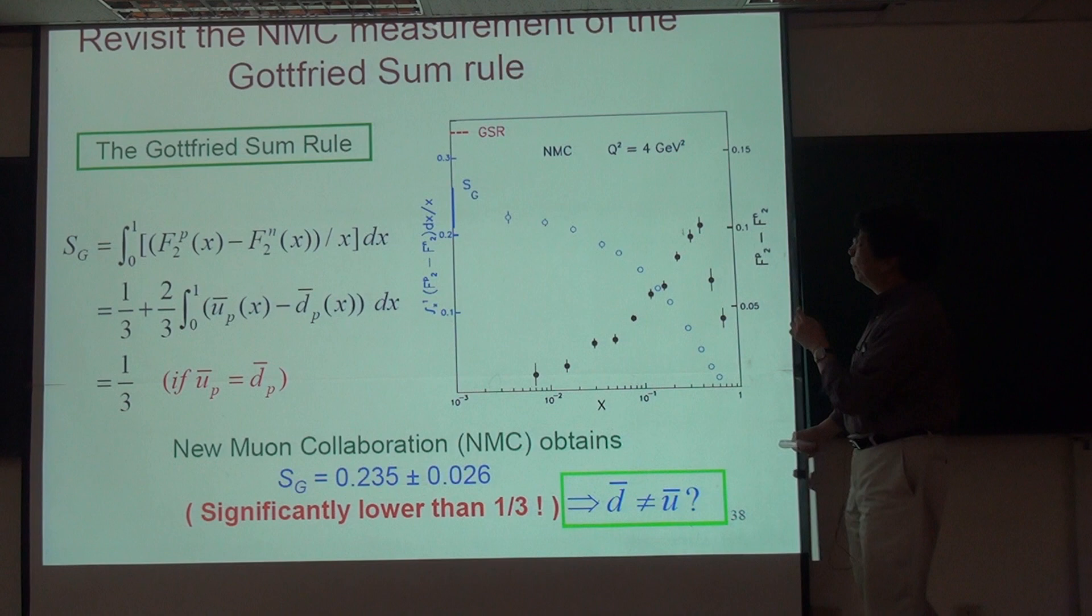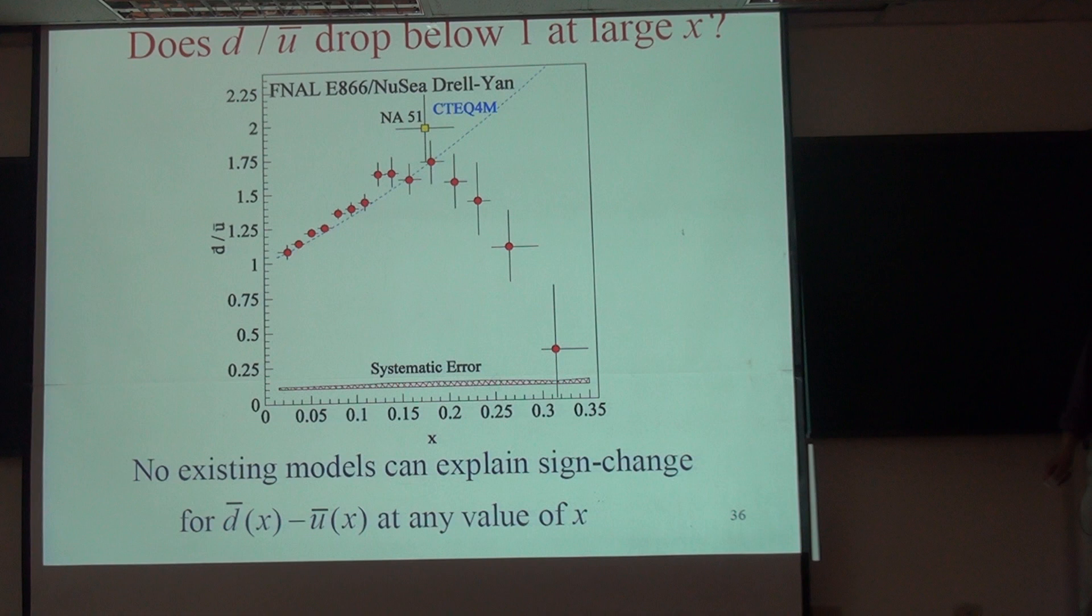Can you go back to the previous? No, the one before. On which variable x the sign changes? Yeah, so you can see that up here it's about 0.25 or something. Unfortunately, the L-bar is very large.